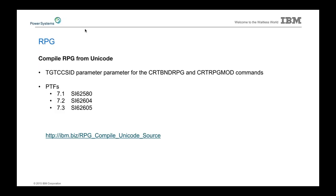Why would storing your source code in Unicode matter? As we move towards storing source code in IFS or other modern file systems, Unicode is the primary CCSID used there. As we look at other IDEs and web-based development tooling like Orion, Unicode becomes much more common. This allows the compiler to interact seamlessly with what the industry is moving towards in application development.